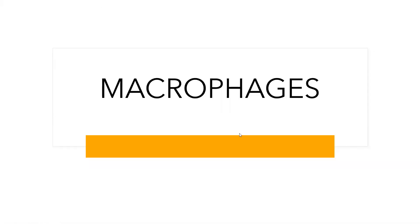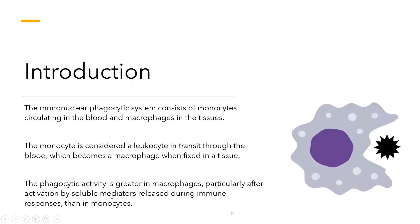Today we are going to look at macrophages, which are very important immunological cells. Recently we talked about granulocytes, including cells with a polymorphonuclear morphology — meaning their nuclei take different shapes — such as neutrophils. Today we look at another group: mononuclear phagocytic cells, which have a simple single nucleus and are phagocytic in nature.